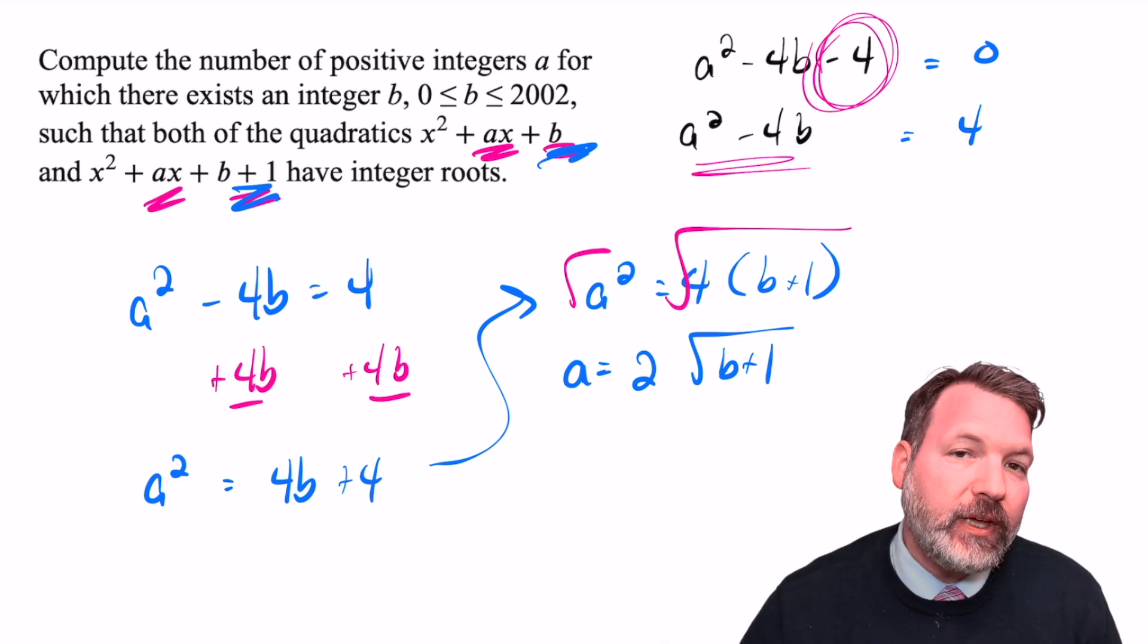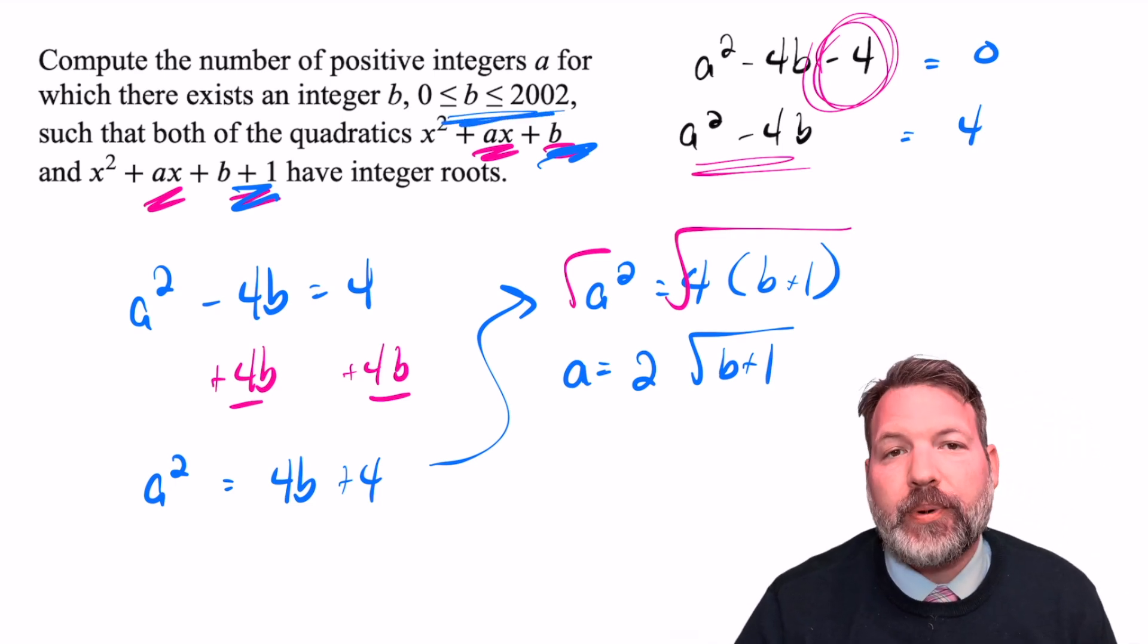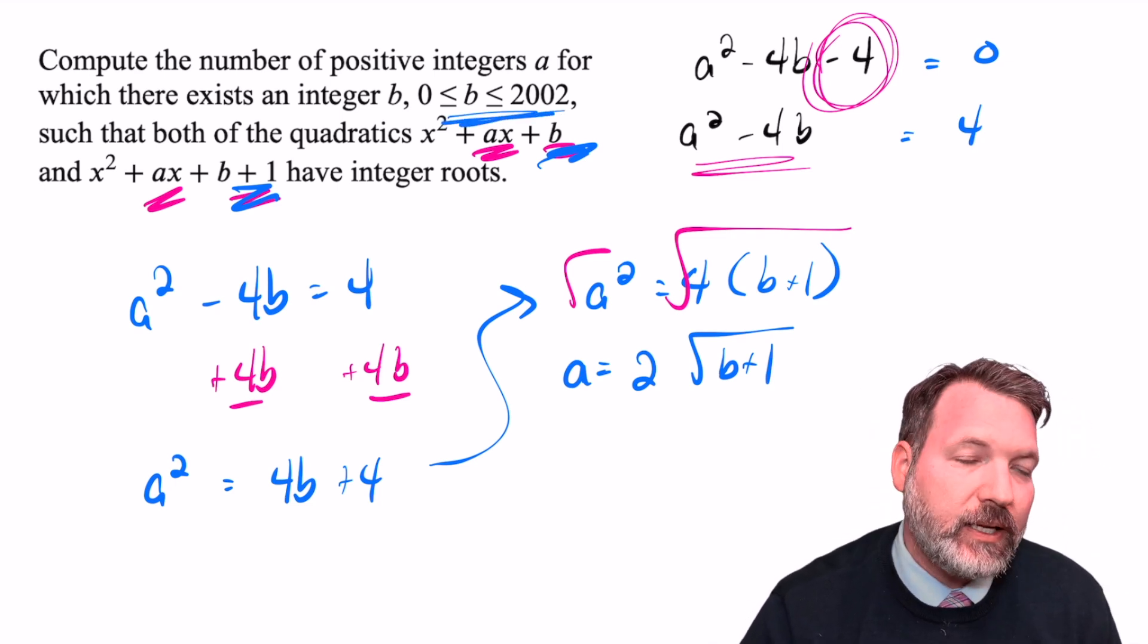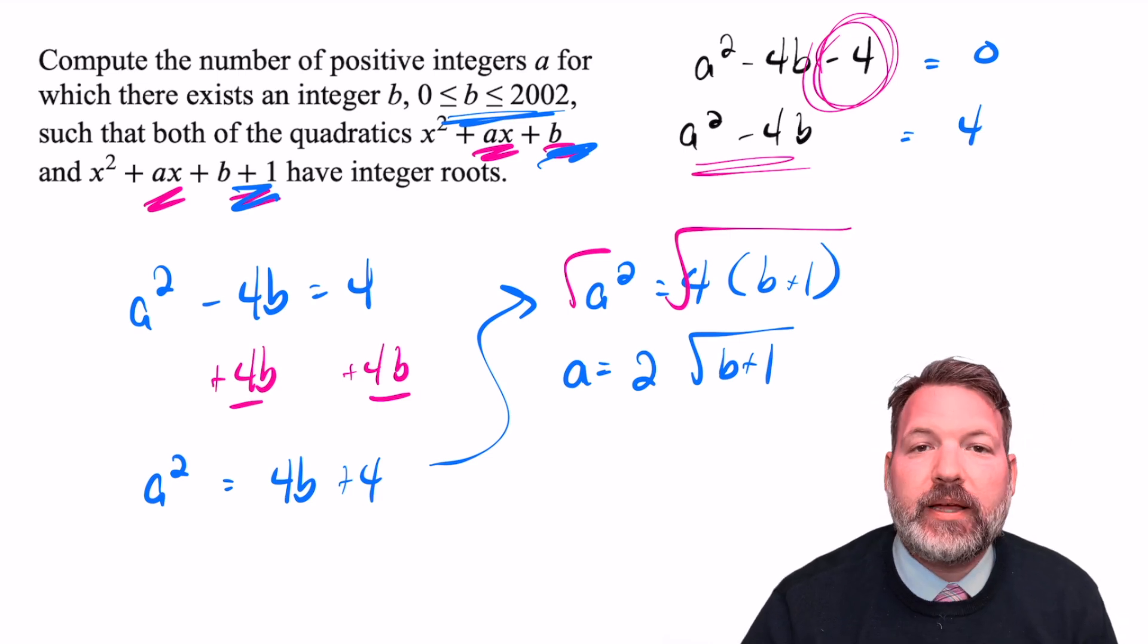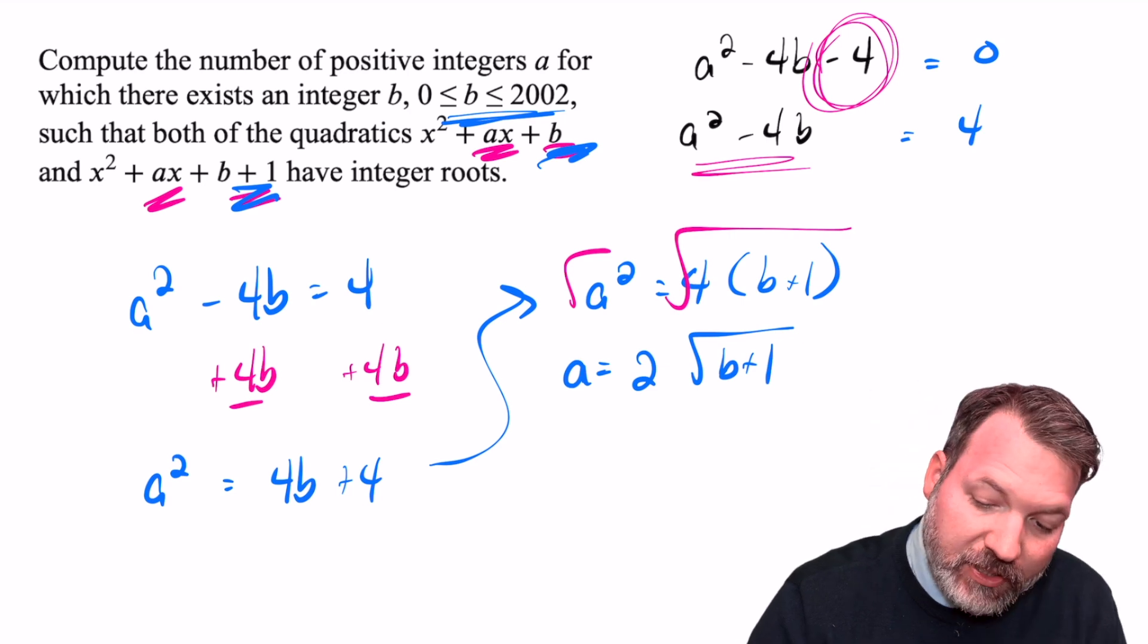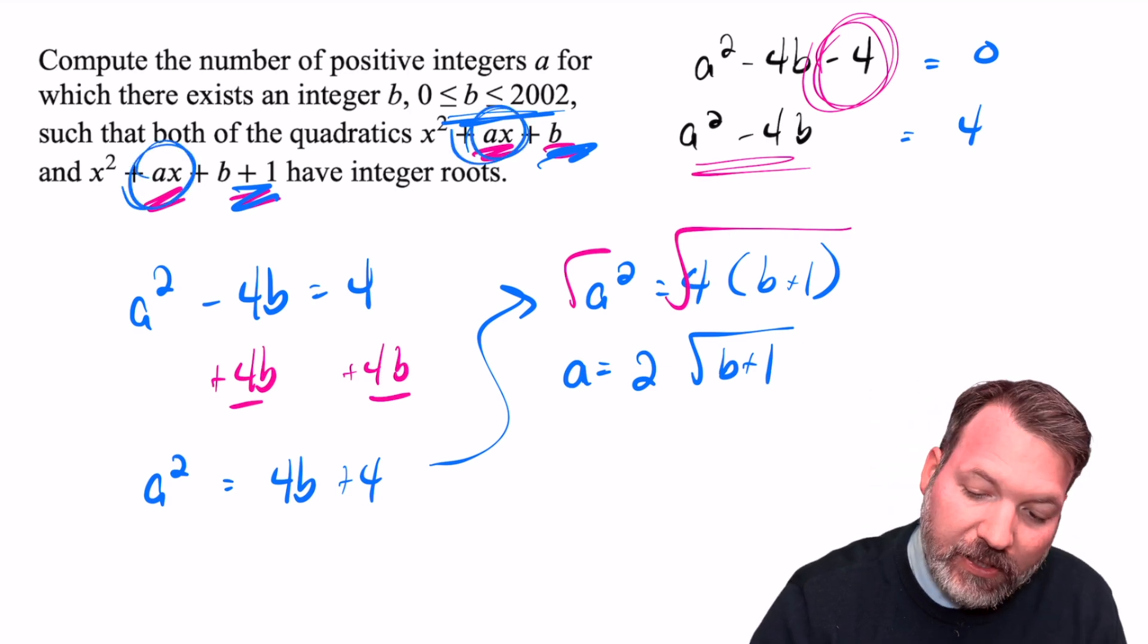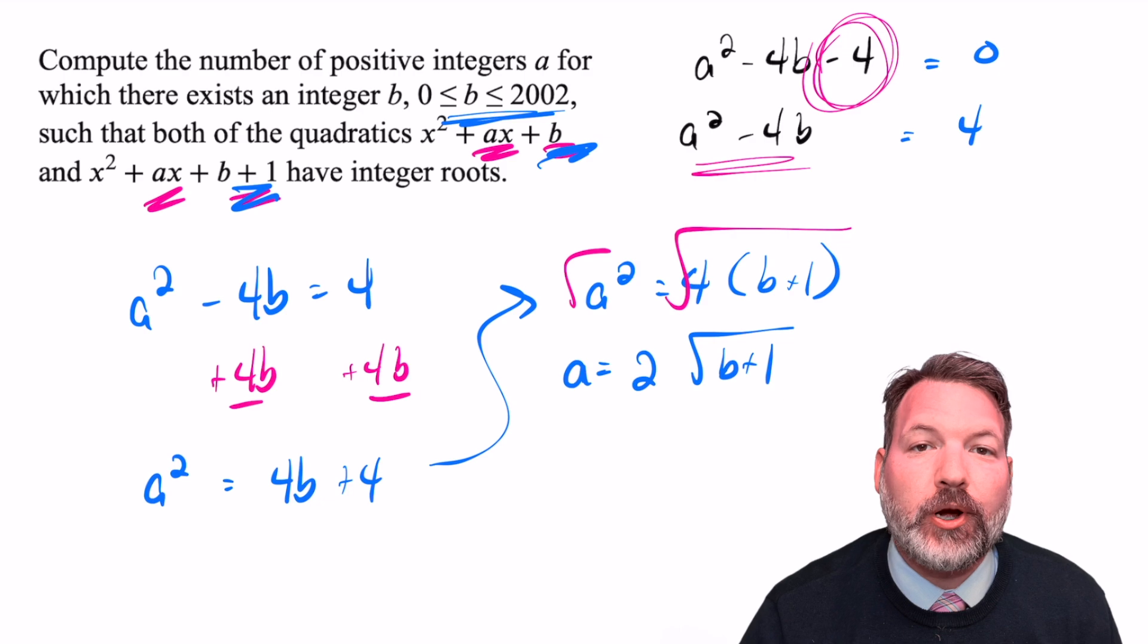There are only 44 possible values of B beginning at zero going all the way up through 2002 that would allow us to create these trinomials with integer roots who have the same linear term, that ax linear term, but whose constant terms are one apart. So there you go.